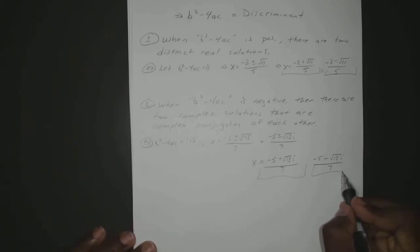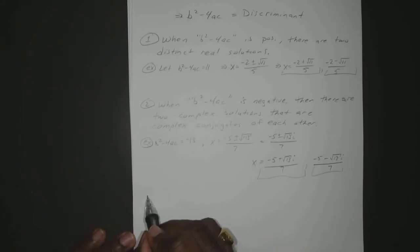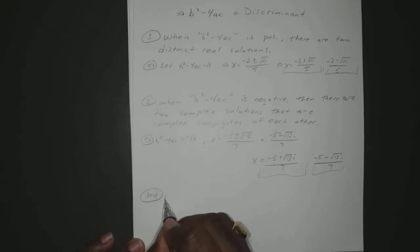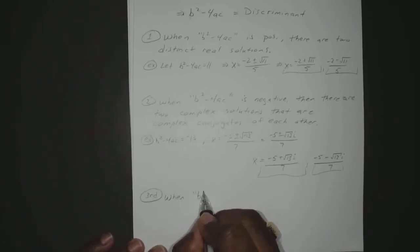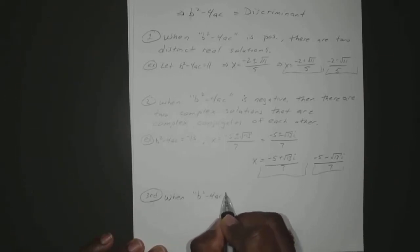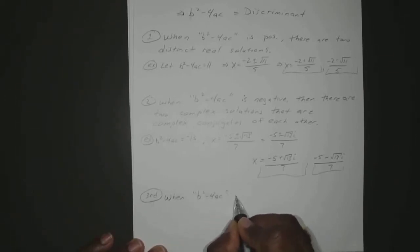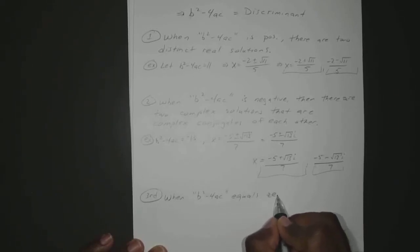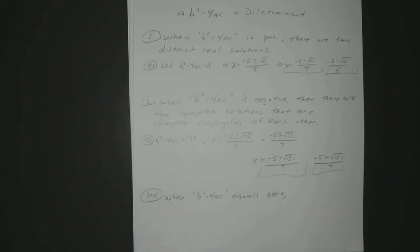Okay, so third — let's say your discriminant equals 0. So when B squared minus 4 times A times C equals 0, you actually have two repeating real solutions.